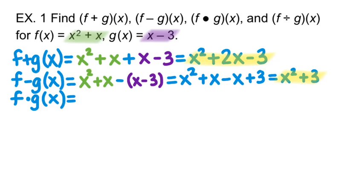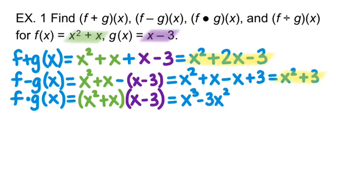Next for f times g of x, we're going to do x squared plus x times x minus 3. We're going to multiply these two binomials by using the FOIL method. So we're going to multiply x squared times x, which is x cubed. Then x squared times negative 3, which is negative 3x squared. x times x is x squared. And x times negative 3, negative 3x.